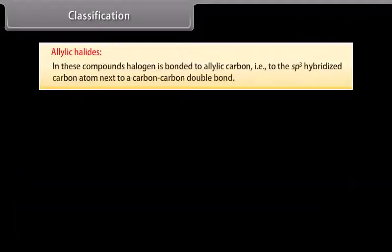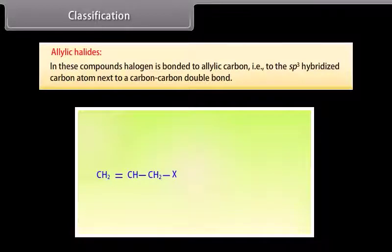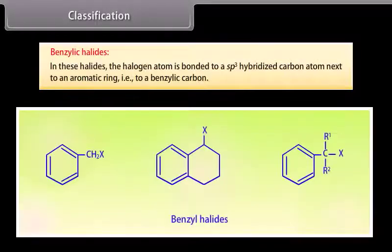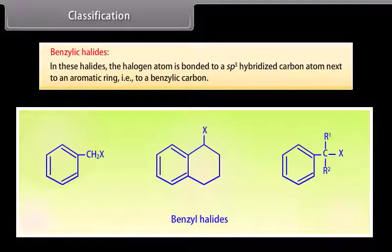Allylic halides: in these compounds the halogen is bonded to an sp3 hybridized carbon atom next to a carbon-carbon double bond. Benzylic halides: in these halides the halogen atom is bonded to an sp3 hybridized carbon atom next to an aromatic ring, that is, to a benzylic carbon.